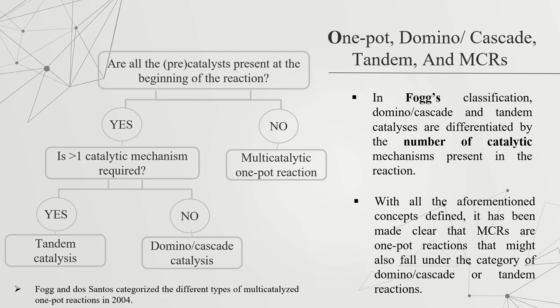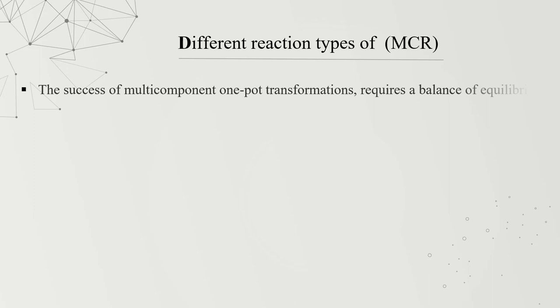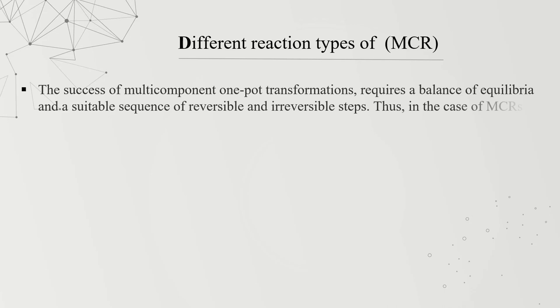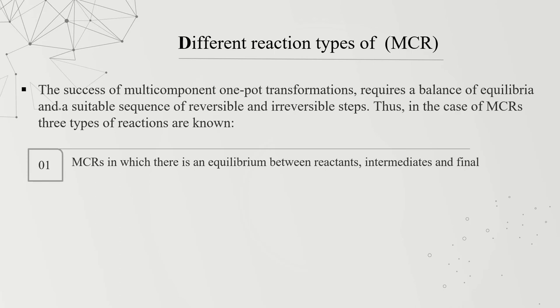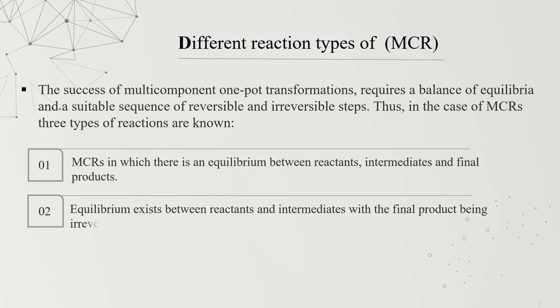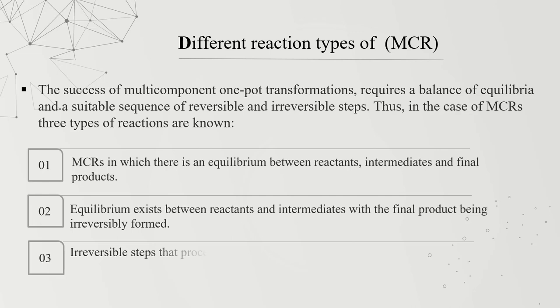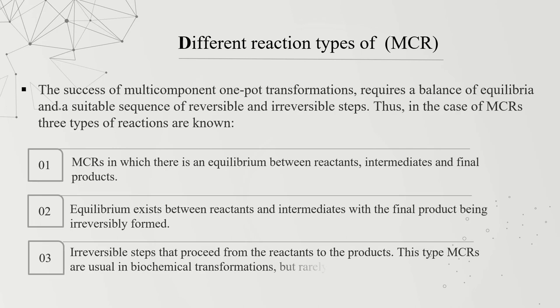In the second part, different reaction types of multi-component reactions are discussed. The success of multi-component one-pot transformation requires a balanced equilibrium and suitable sequence of reversible and irreversible steps. Three types are known: the first type has an equilibrium between reactant, intermediate, and final product; the second type has equilibrium between reactant and intermediate with the final product being irreversibly formed; and the third type has irreversible steps proceeding from reactant to product. This third type usually occurs in biochemical transformations but rarely in preparative chemistry.